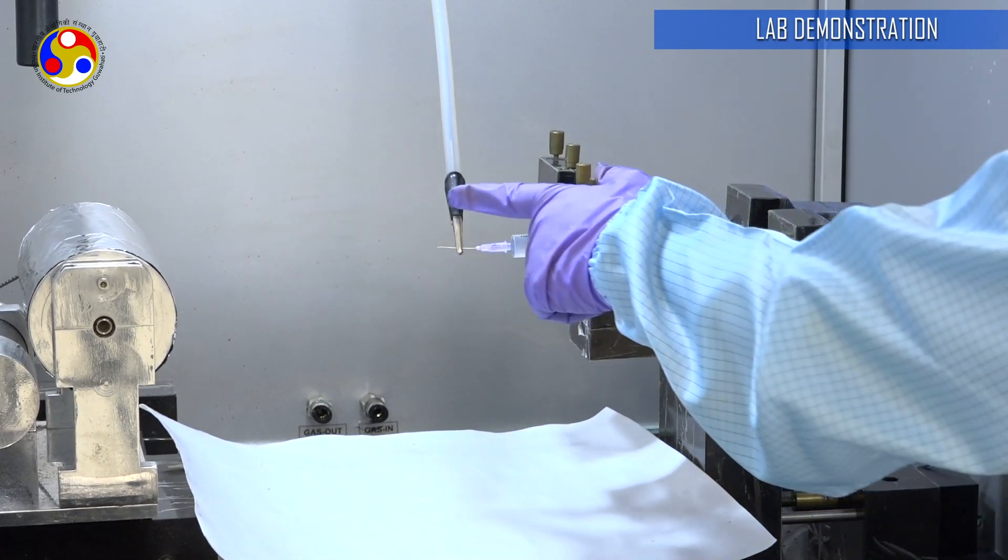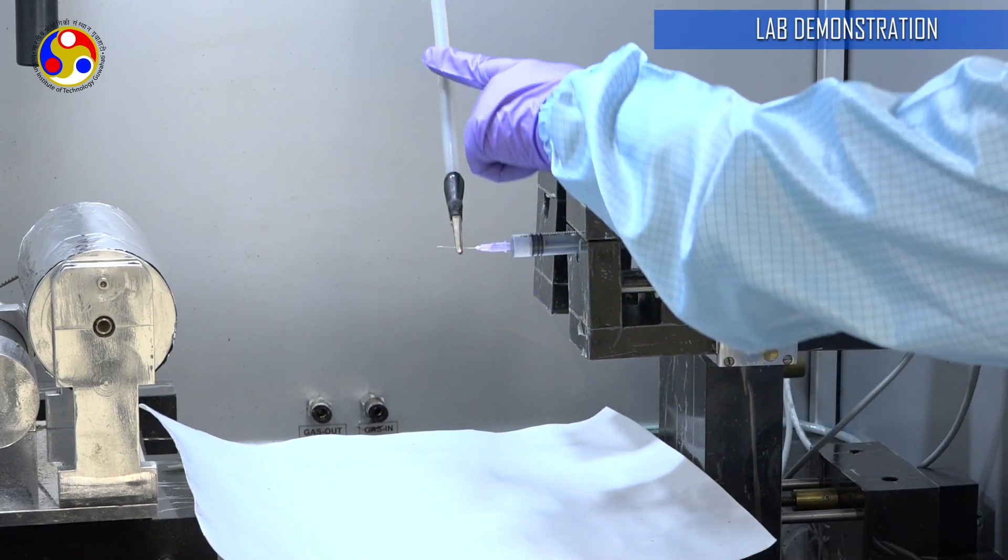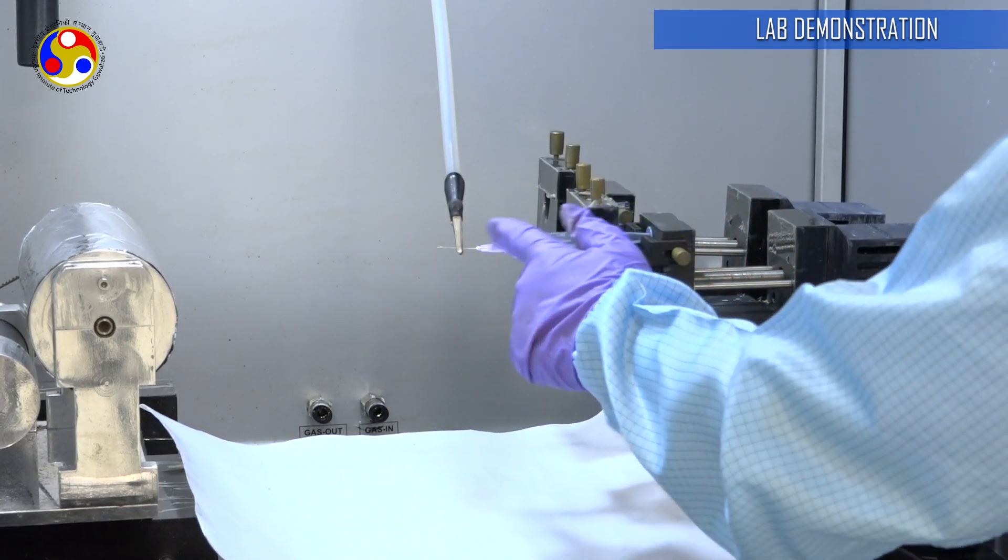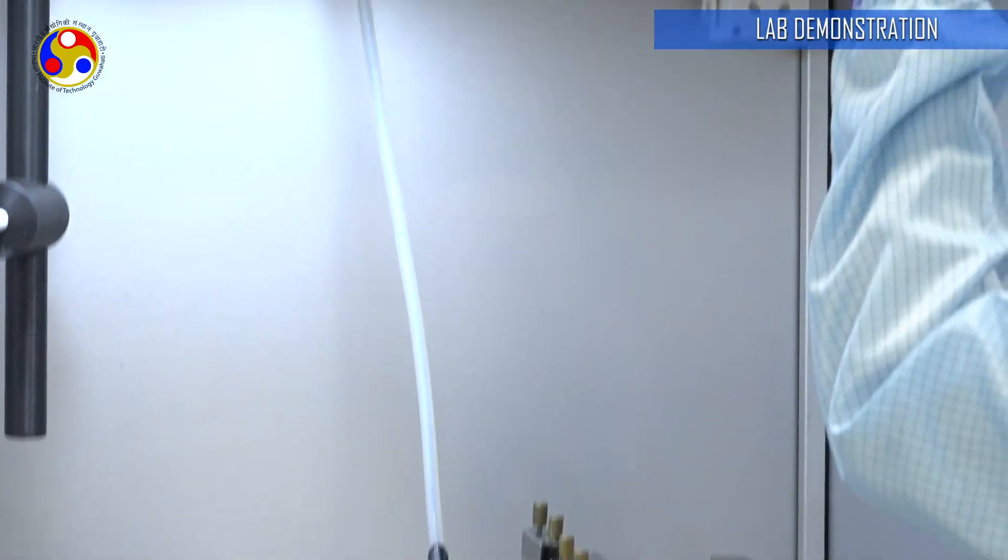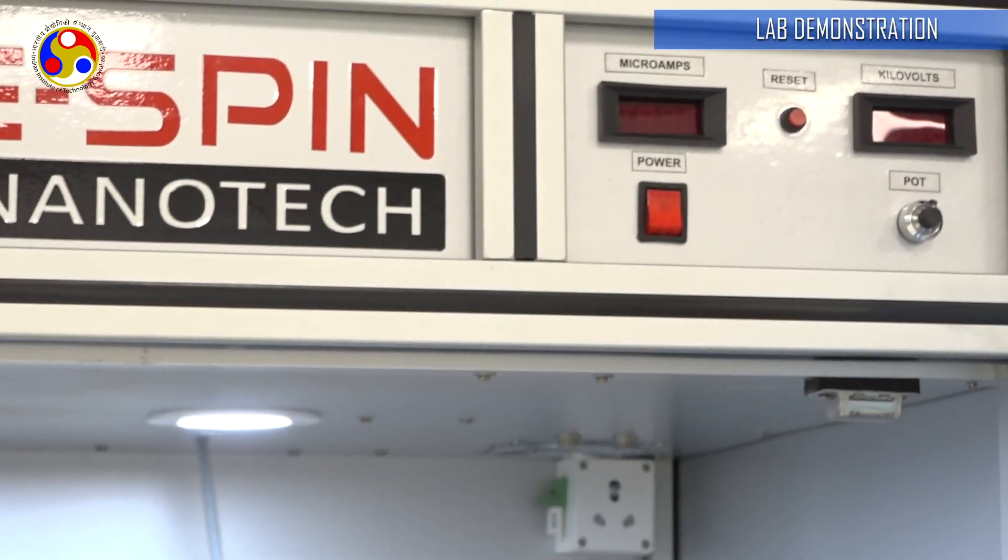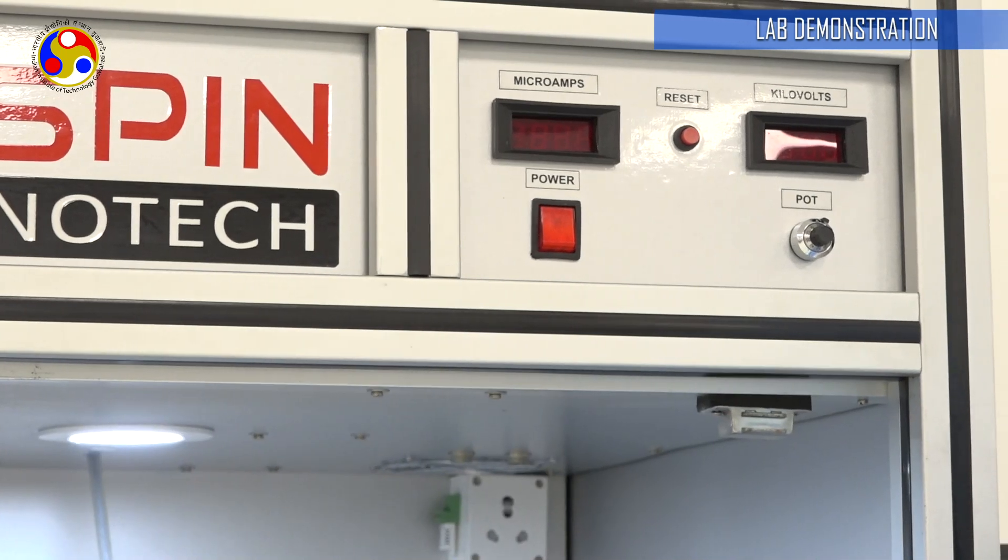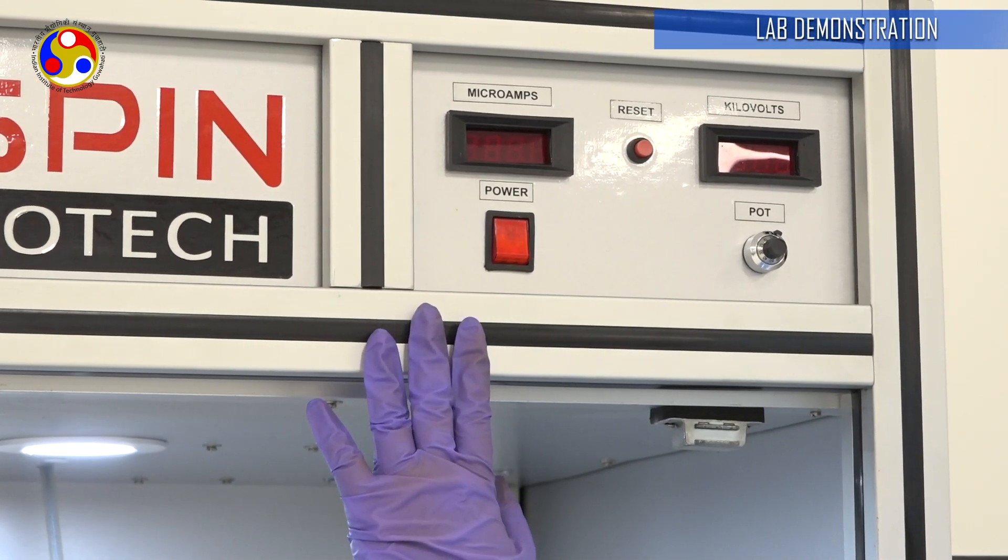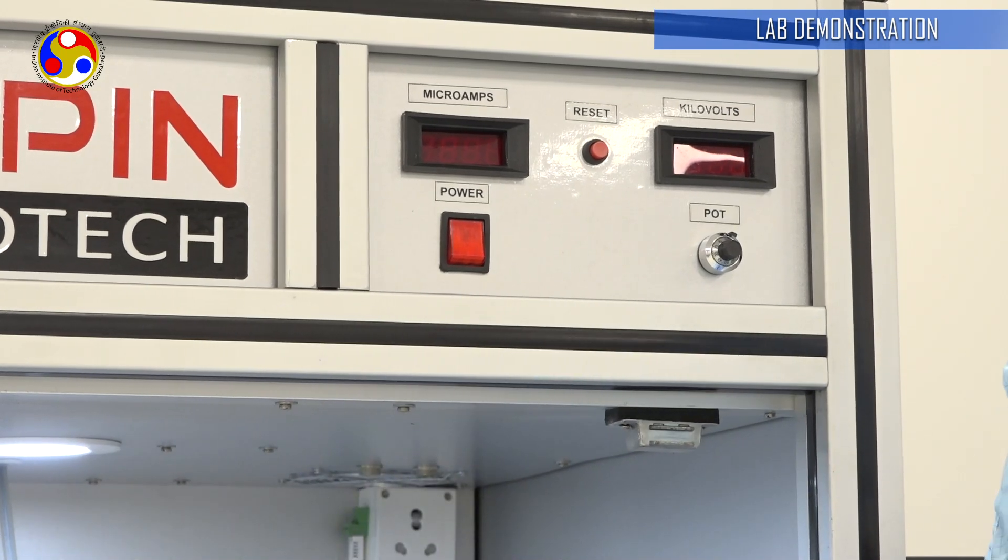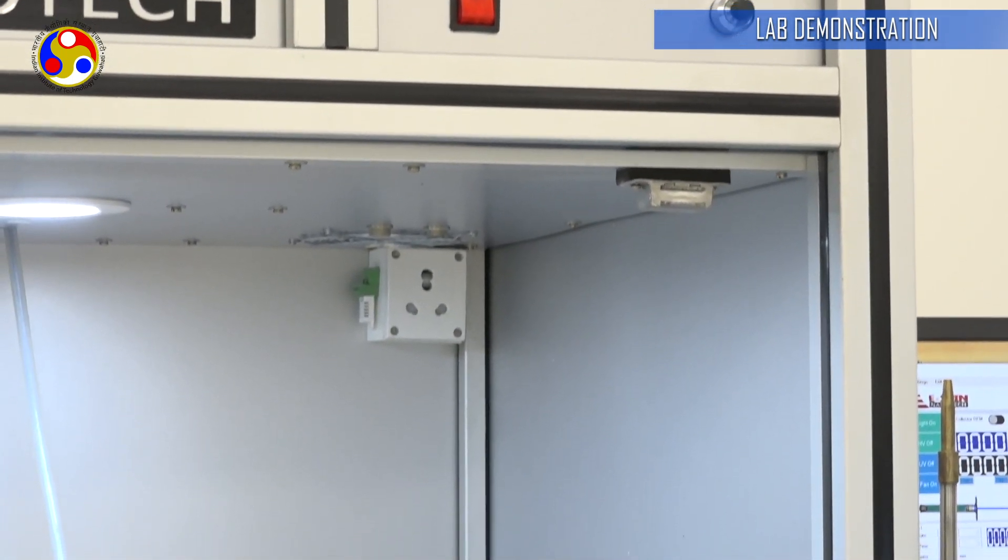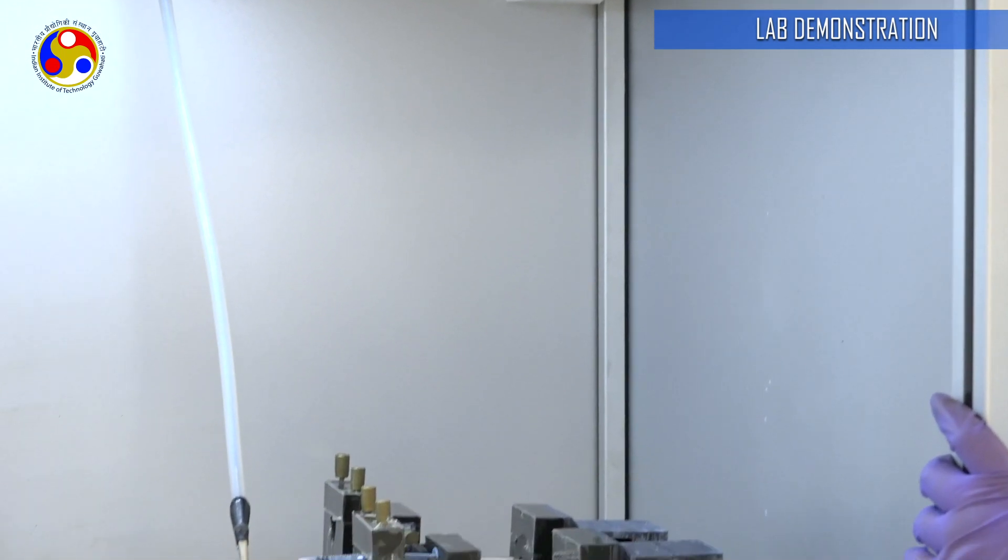As I was saying, another important parameter is the high voltage that we will apply between the syringe needle and the collector. This power source inside has a maximum power capacity of 80 kilovolts, but it is advisable to keep the voltage at below 30 kilovolts. Of course, that will depend on the sample that we are going to spin.